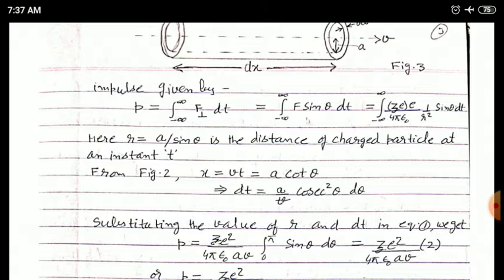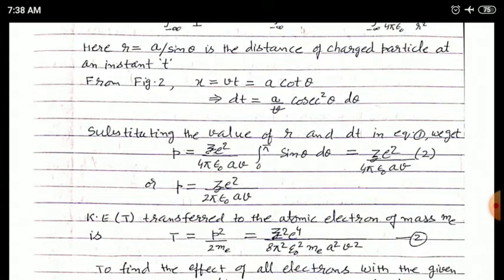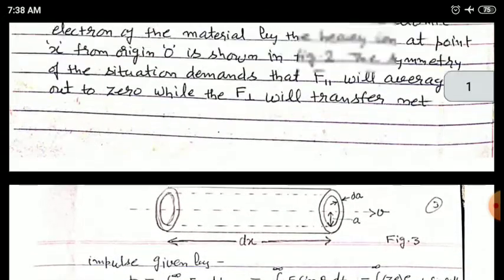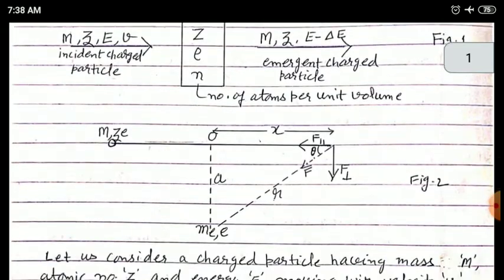Substituting the values of r and dt into the equation, we get p equal to ze squared over (4 pi epsilon_0 a v) multiplied by the integral from 0 to pi of sin(theta) dtheta. Solving this gives p equal to ze squared over (2 pi epsilon_0 a v). Here small z is the atomic number of the incident charged particle, and capital Z is the proton number of the nuclei of the material through which the incident particle is passing.